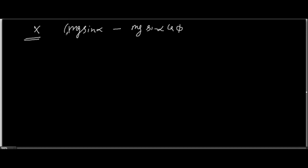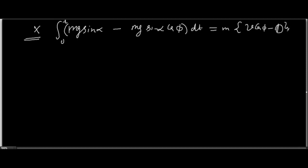The net force at an instant, integrated from 0 to t, gives the net impulse along the x-direction, which must equal m times v cos φ minus 0. The initial velocity along the x-direction was 0.